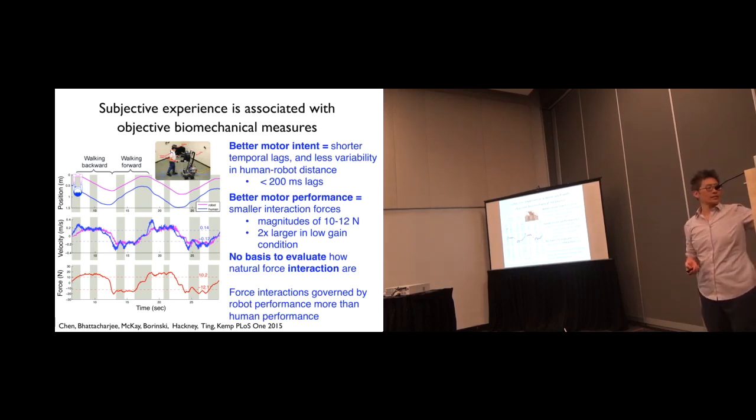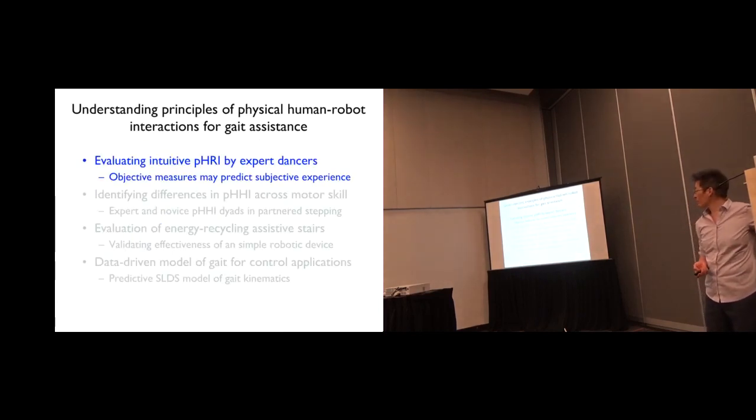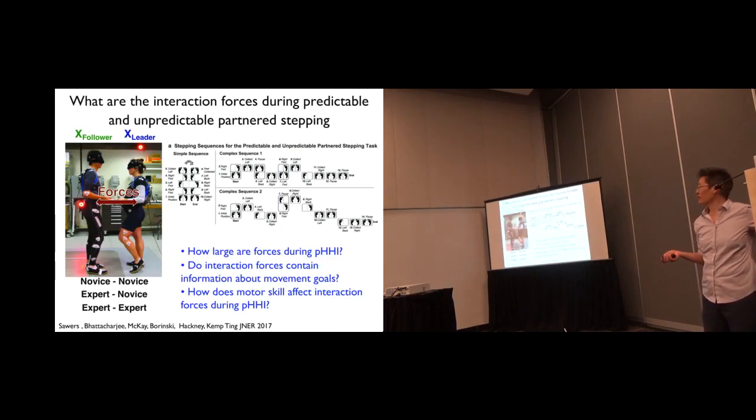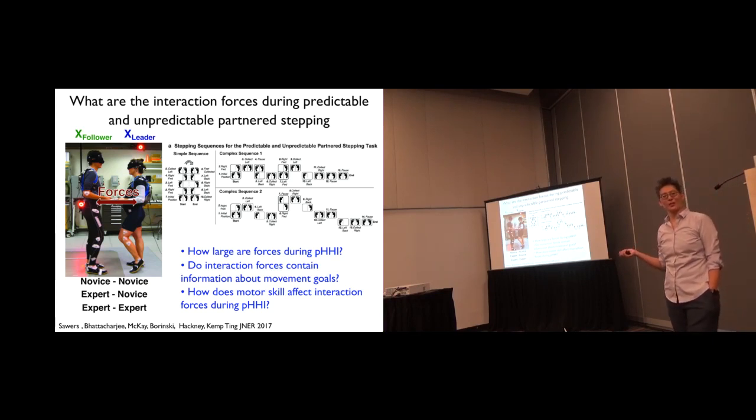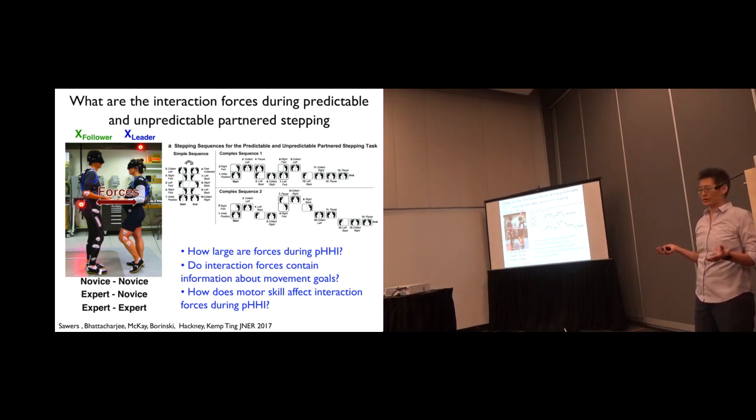So the next thing we did was to look at physical human interactions during stepping, where we have a force transducer and generating a stepping pattern forward and backward, but also a pseudo-random pattern that we had the leaders learn so that we could look at what happens when the subjects didn't know what to expect.